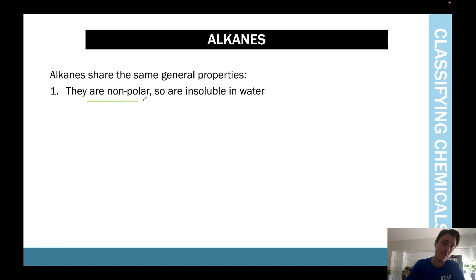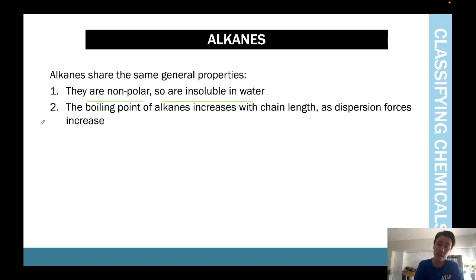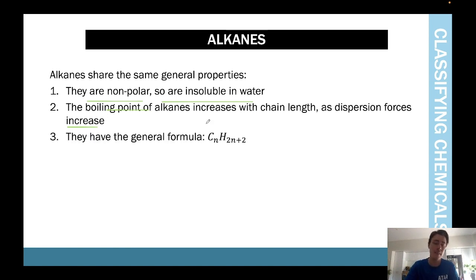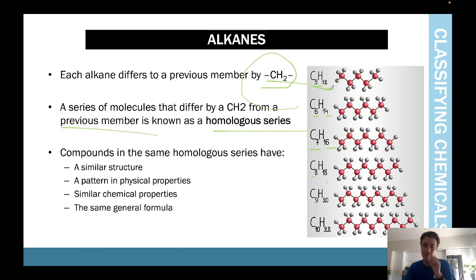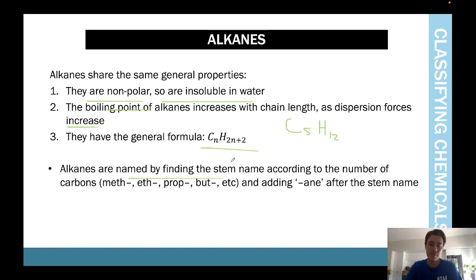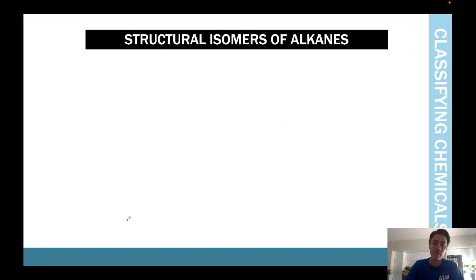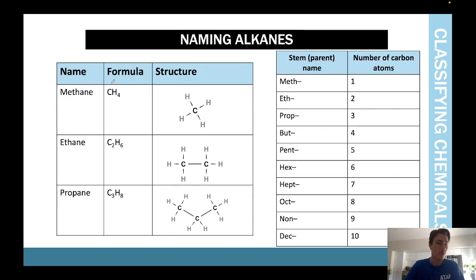Alkanes share general properties — they are non-polar and insoluble in water. Boiling point increases as chain length increases because dispersion forces increase. Short chains have a low boiling point; long chains have a high boiling point. The general formula is CnH(2n+2) — multiply the number of carbons by two and add two. Alkanes are named by finding the stem name according to the number of carbons, then adding 'ane' to the end.